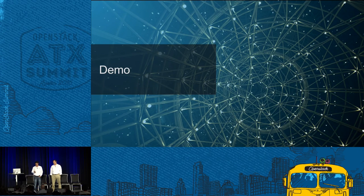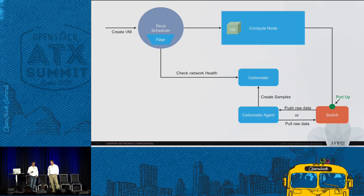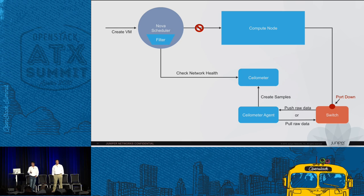For the demo, we have a simple setup with one single node acting as a compute node. We demonstrate two cases: first, the normal case where the compute node's uplink connectivity is up and the VM is placed successfully. Second, what happens when the port is down — the scheduler rejects that compute node. We'll now play a short video capturing this workflow.